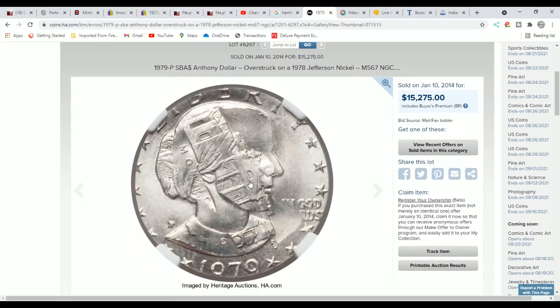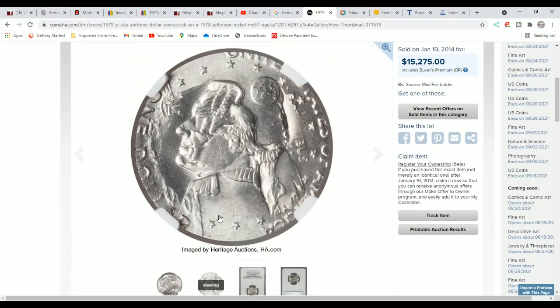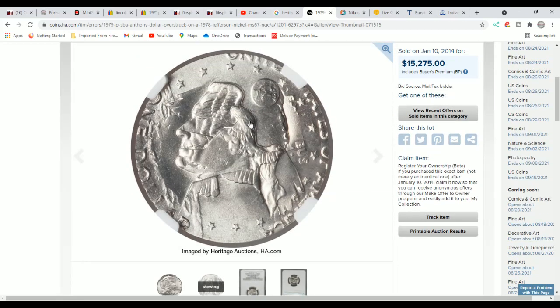This one sold for $15,000. No wonder people want their coins to be worth a lot of money. No wonder they want them to be the double denomination. But this is what it should look like right here. So I hope this helped you learn about what a dual denomination looks like and what it doesn't look like.